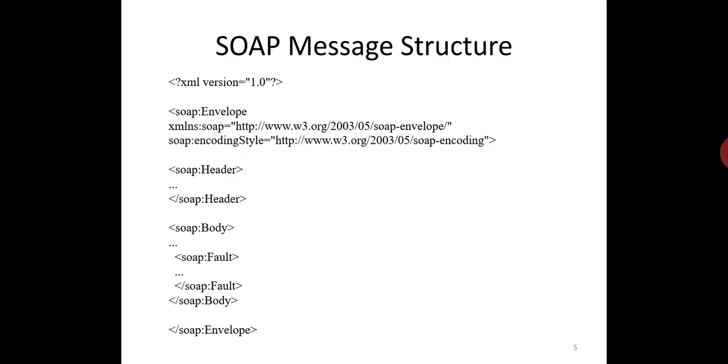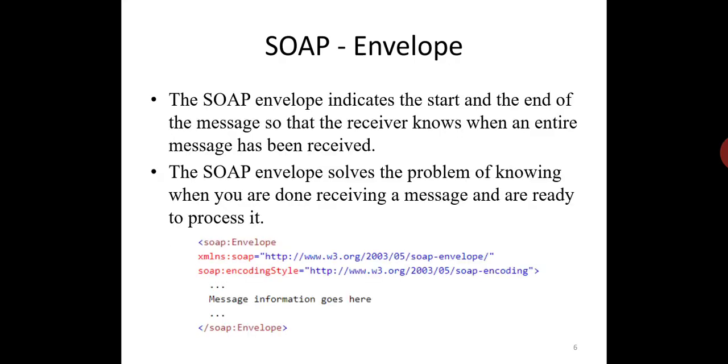SOAP message structure. The following depicts the general structure of a SOAP message. SOAP envelope indicates the start and end of the message so that the receiver knows when an entire message has been received. The SOAP envelope element is the root element of SOAP message. This element defines the XML document as a SOAP message.